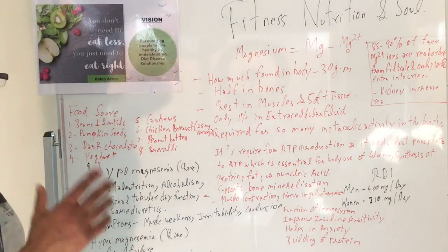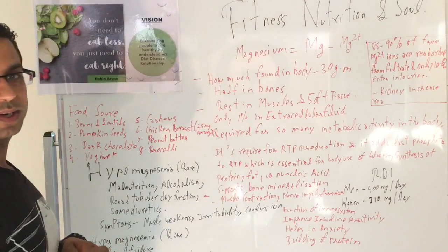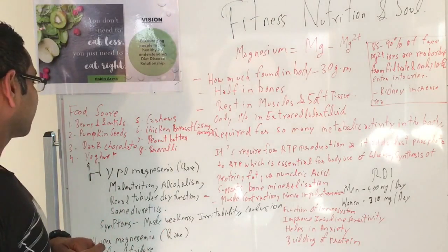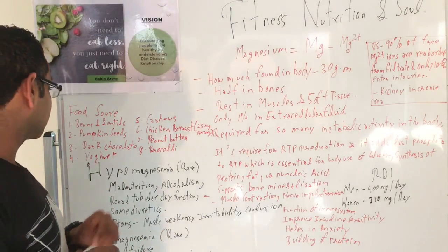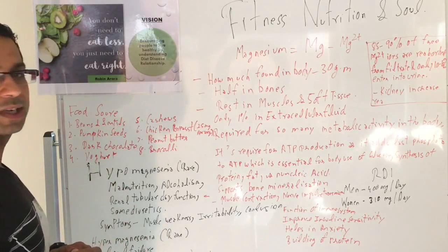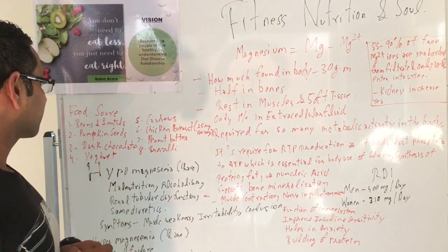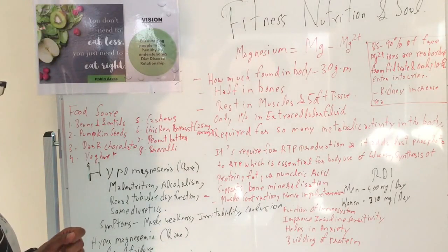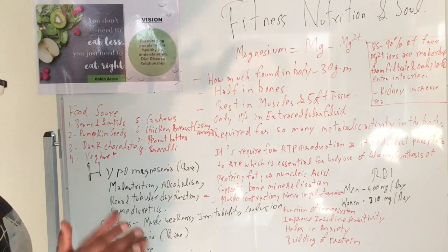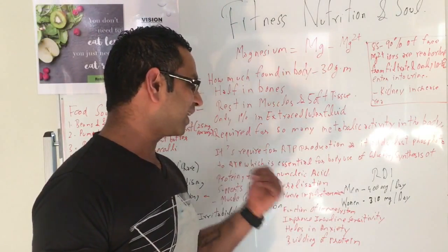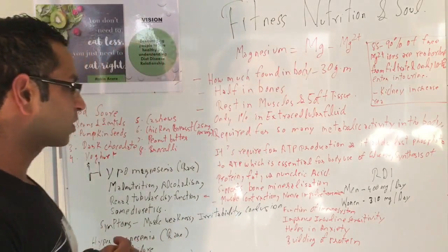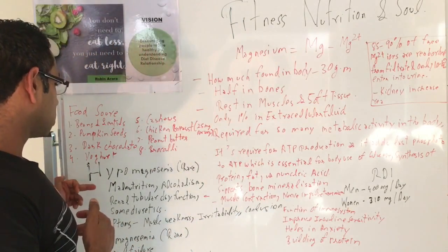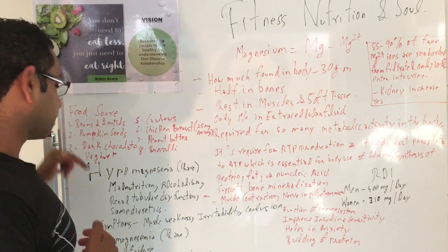So let's check out the food sources of magnesium. First is beans and lentils. Second is pumpkin seeds. Third is dark chocolate. Fourth is yogurt. Fifth is cashews. Sixth is chicken breast. Seventh is peanut butter. And eighth is broccoli. How much do we need? We need 400 milligrams for men and 310 milligrams for women.